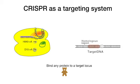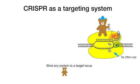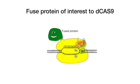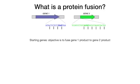In this example, we carry our favorite bear to the target DNA. Looks good in a cartoon, but how do we attach a protein to D-Cas9? We fuse the protein of interest to the D-Cas9 protein. What is a protein fusion?